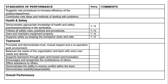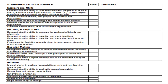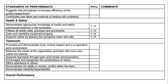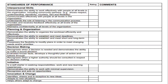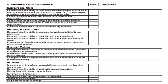Carried over from the previous sections, the form covers health and safety, teamwork, and overall performance. The nine standards of performance are: job knowledge and skill, quality of work, interpersonal skills, planning and organization, initiative, innovation and change, health and safety, and teamwork — totaling nine standards with approximately sixty items overall.